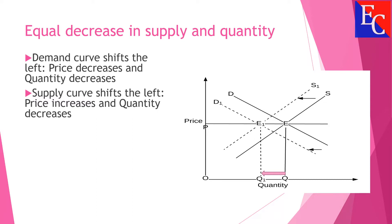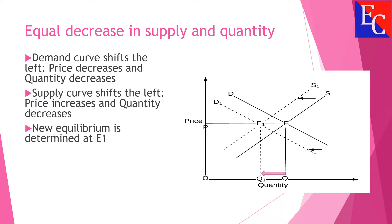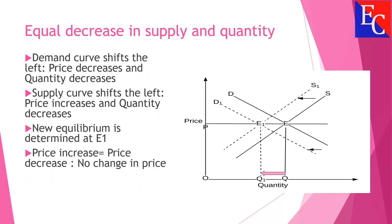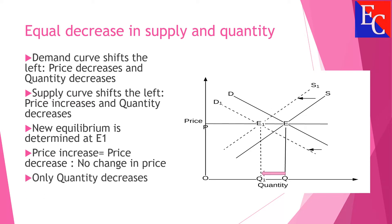Price increases and quantity decreases. The new equilibrium is determined at E1. In this case, the increase in price is equal to the decrease in price, so there is no change in price — only quantity decreases.